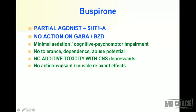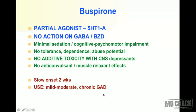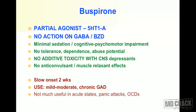There are four special important points about buspirone. It has a slow onset of action — not a rapidly acting drug — with onset of about 2 weeks. It can be used for mild to moderate as well as chronic generalized anxiety disorder. It is not very useful in acute states, panic attacks, or OCDs. So when you think of anxiety, think of buspirone first: no addiction potential, no abuse potential, and minimal sedation.